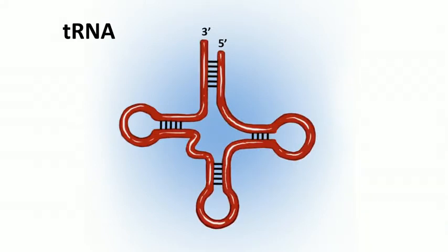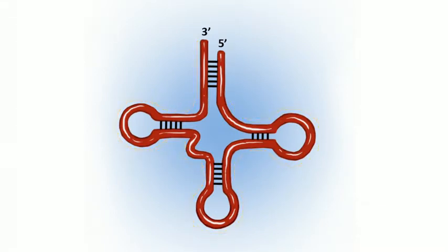tRNA is very important in the translation of proteins or polypeptides. tRNA has a very unique cloverleaf structure which you need to be able to identify — burn that image into your mind. In order to start building a polypeptide, you need to attach an amino acid to each tRNA molecule.